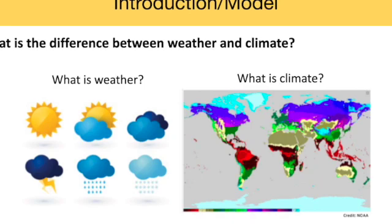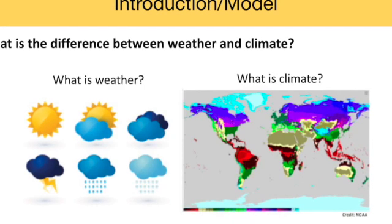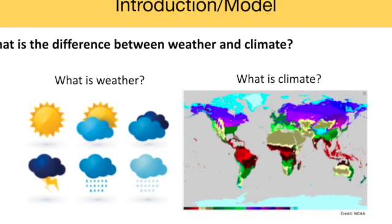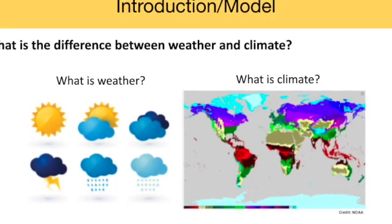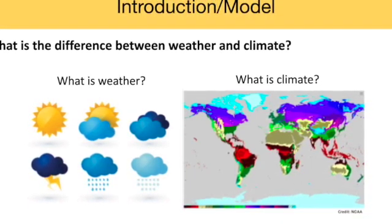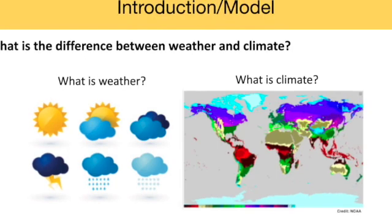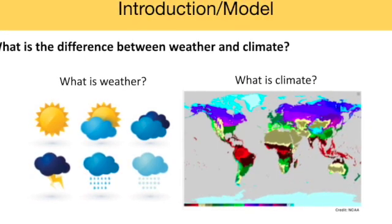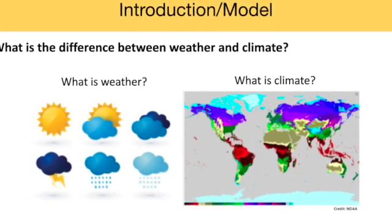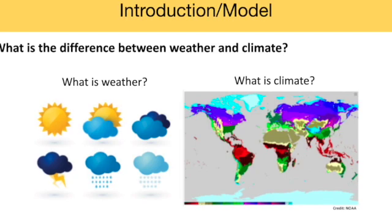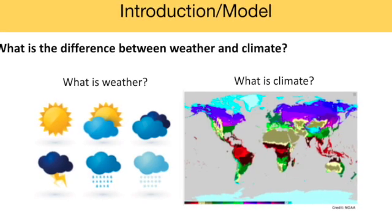The first topic in the new climate change unit is the difference between weather and climate. This is a key distinction for students to make, and one that they may have misconceptions about. In a nutshell, weather is short-term and temporary, while climate is long-term and more — but not entirely — permanent.